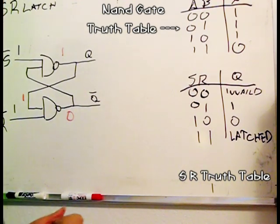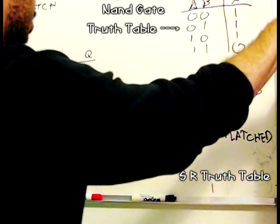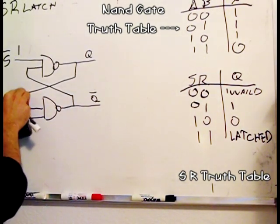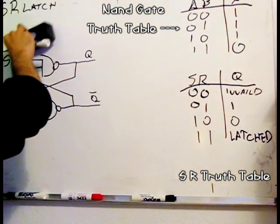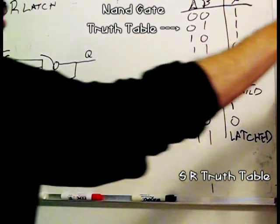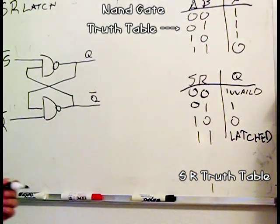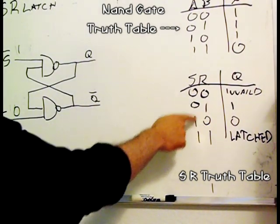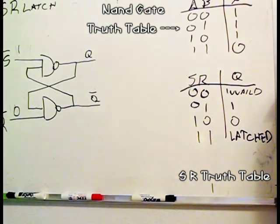So let's do the opposite. Let's reset a zero. To reset a zero, remember these inputs are active low. So to reset a zero: one and zero. One and zero. R is zero, S is one. Let's see what happens. When we put a zero here, we drive this to one.